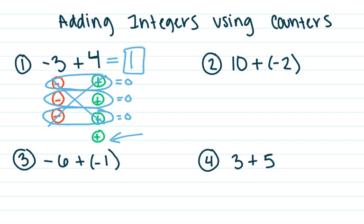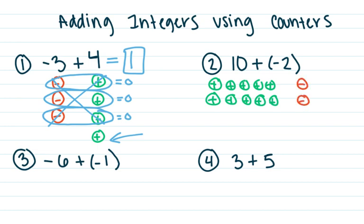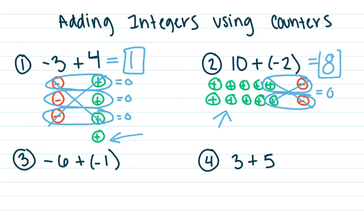Let's take a look at the next one. Over here I have ten positives — one, two, three, four, five, six, seven, eight, nine, ten — and I have two negatives. Again, to add these together, I want to find my zero pairs. A zero pair is a positive with a negative; they cancel each other out and equal zero. I am left with eight positives left over, so my answer is a positive eight.